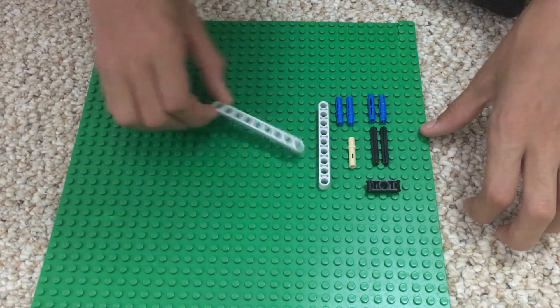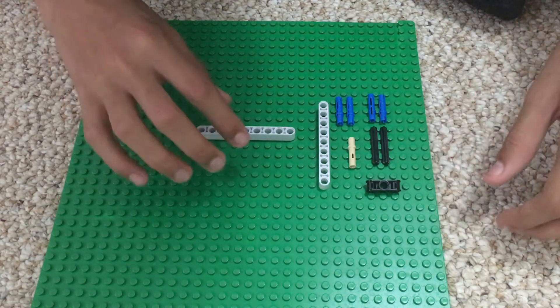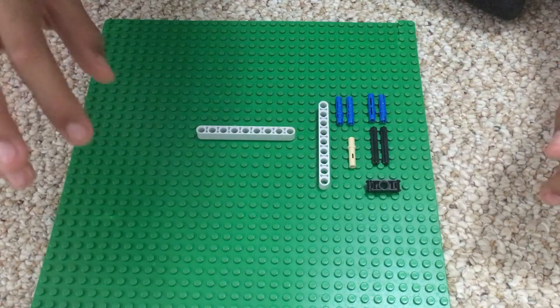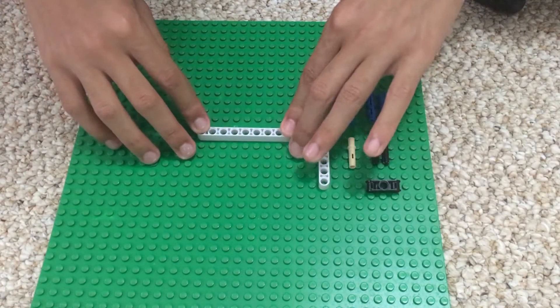The first step is you're gonna take this - oh, this fidget spinner does not require a bearing - so you take this side.